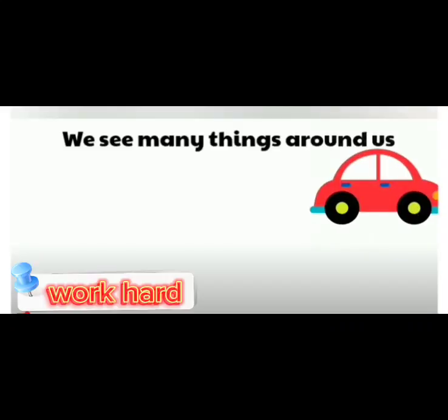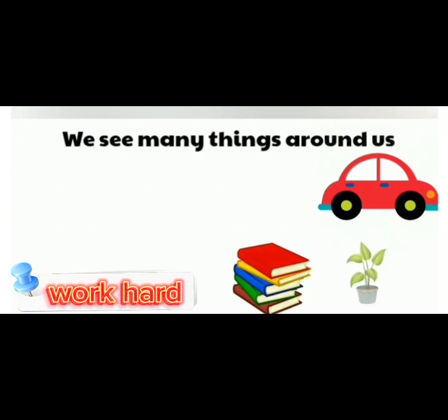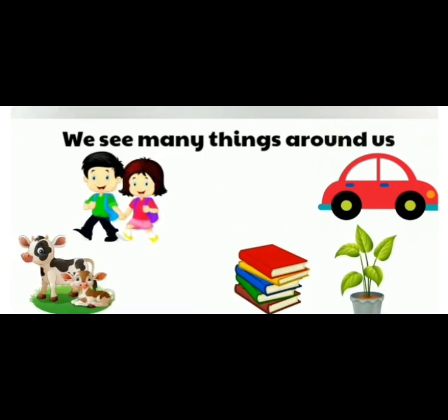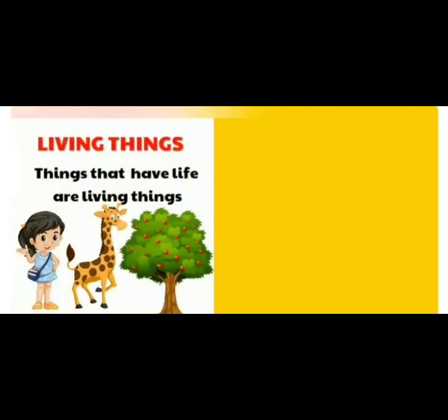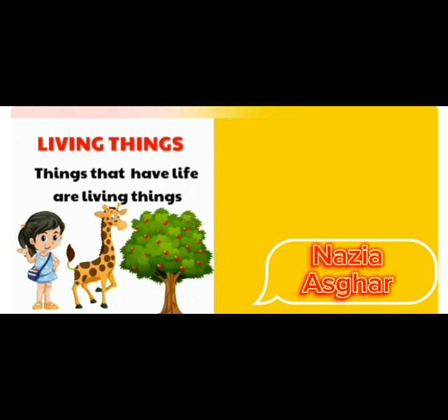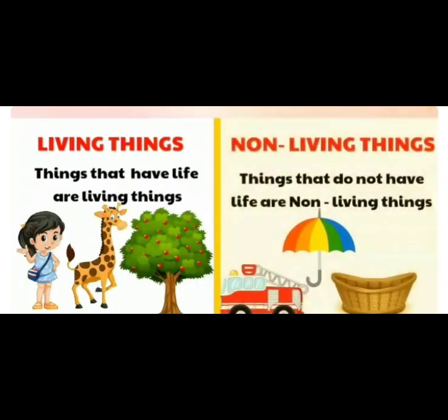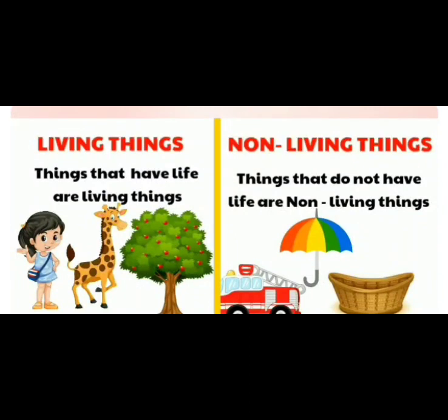We see many things around us. Some are living things while some are non-living things. Things that have life are living things, like human beings, animals and plants. Things that do not have life are non-living things, like umbrella, basket, fire engine and many more.